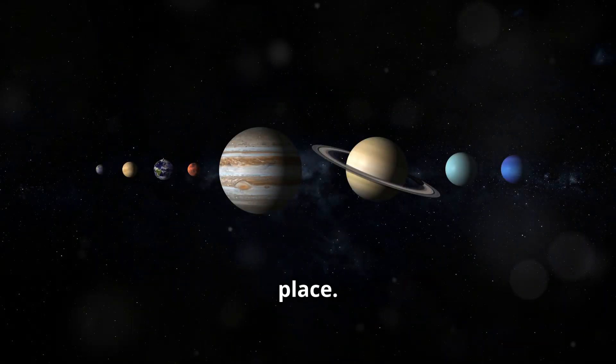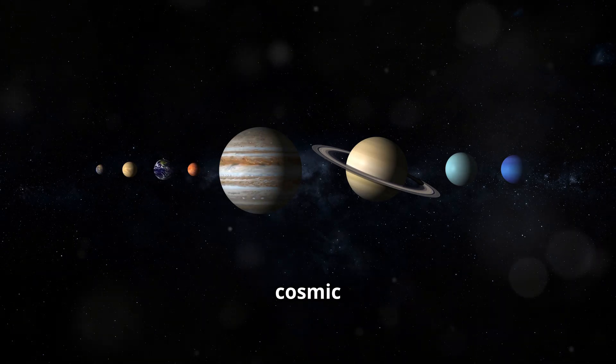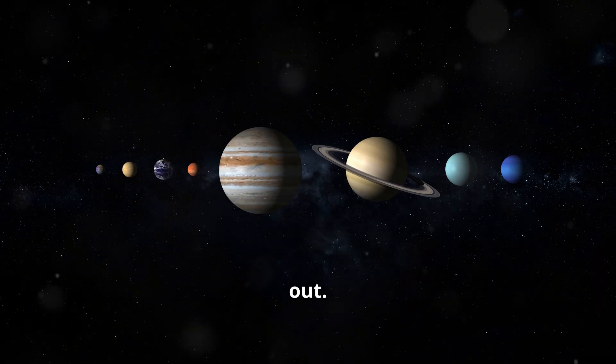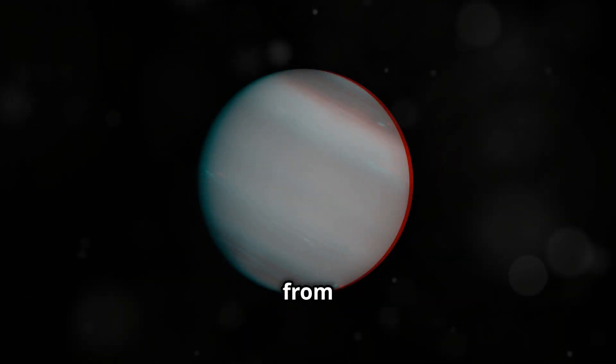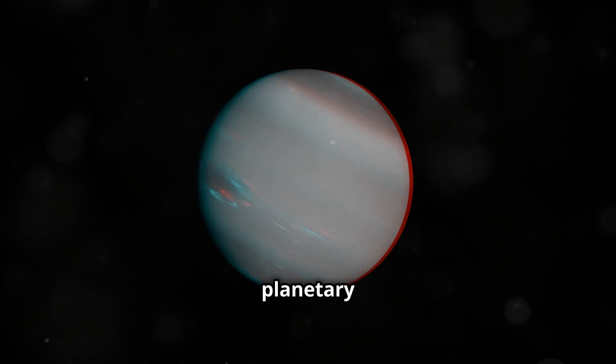Our solar system is a familiar place. We often think of it as a well-charted territory, a cosmic neighborhood we know inside and out. We know about the eight planets, from fiery Mercury closest to the Sun to icy Neptune, the farthest in our planetary lineup.